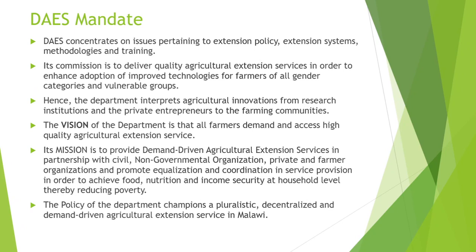Its commission is to deliver quality agricultural extension services with the purpose to enhance adoption of improved technologies for farmers of all gender categories and vulnerable groups. The Department interprets agricultural innovations from research and the private entrepreneurs to the farming communities. The vision of the Department is that all farmers demand and access high-quality agricultural extension services. Its mission is to provide demand-driven agricultural extension services in partnership with civil, non-governmental organizations, private, and farm organizations, and promote equalization and coordination in service provision in order to achieve food, nutrition, and income security at the household level, thereby reducing poverty. The policy champions a holistic, decentralized, and demand-driven agricultural extension services in Malawi.